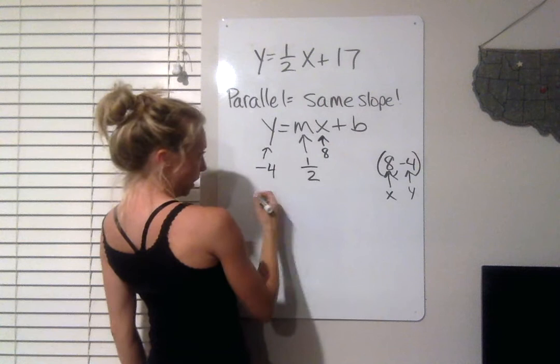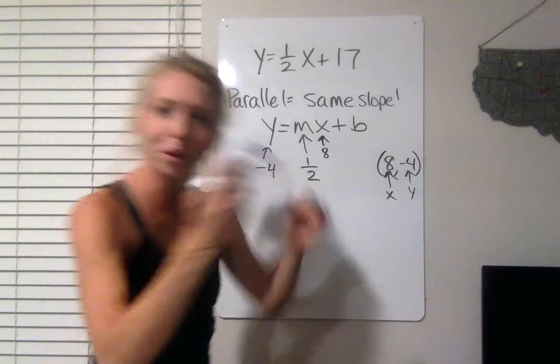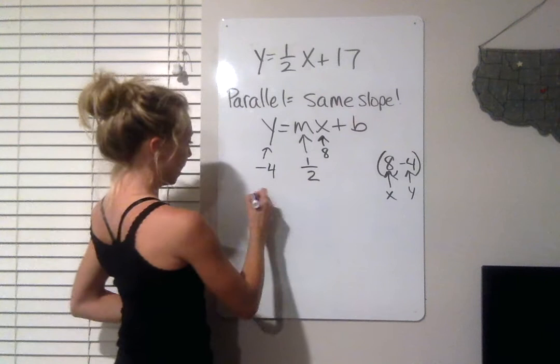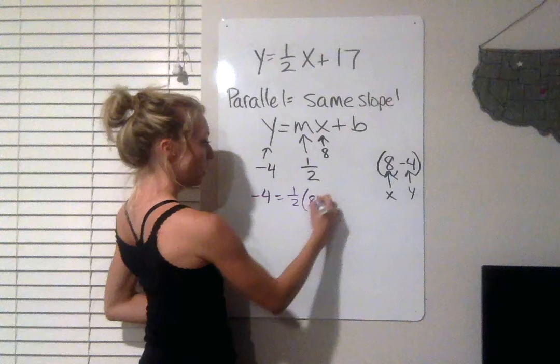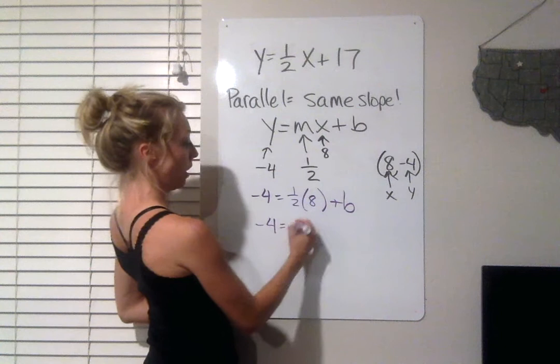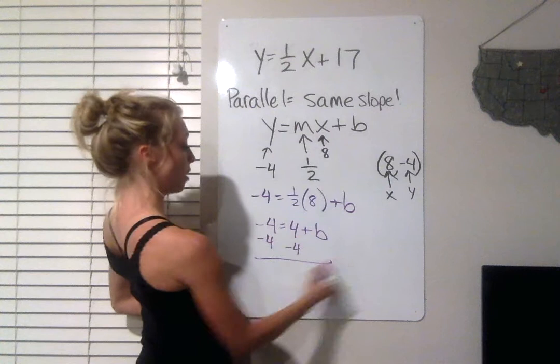So that means when I put those in, let's go purple. Keep it fresh, keep it funky, like grapes. Negative 4 equals half of 8 plus my Y intercept. Half of 8 is 4. Subtract the 4 to the other side to solve for B. My Y intercept is negative 8.